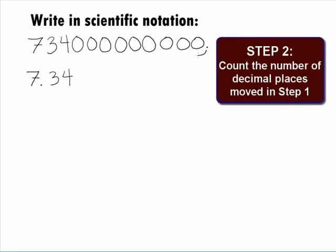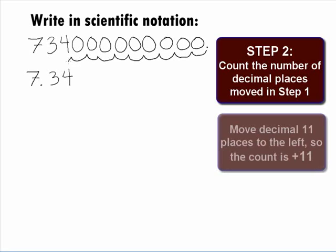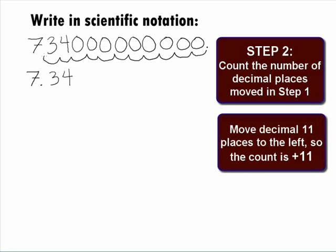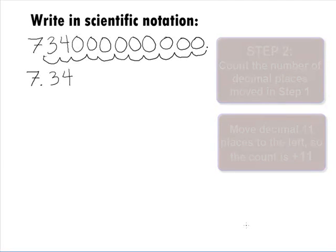In Step 2, we need to count the number of decimal places moved in Step 1. So, how many decimal places did we end up moving and in what direction? It looks like we moved the decimal 11 places to the left to go from 734 billion to 7.34. So, our count is plus 11.